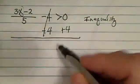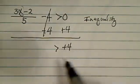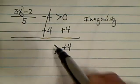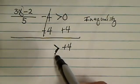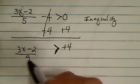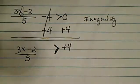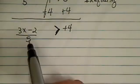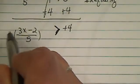We add 4 on both sides. As long as you add and subtract, the sign of this inequality does not change. We have 3x minus 2 over 5 now since we moved 4 over. The next thing you want to do is get rid of this 5 by multiplying by 5.